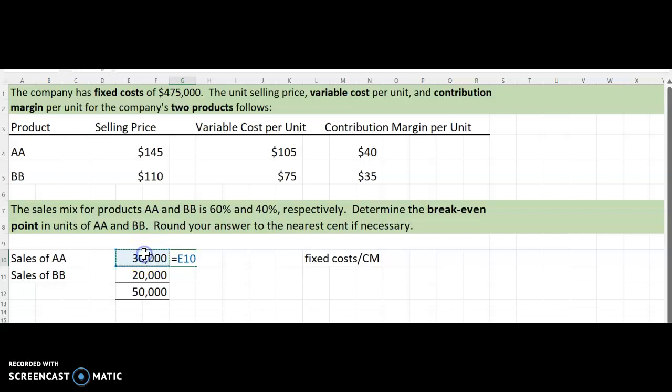So the sales of AA divided by the total, and you would get 0.6, so you would see that that is 60%. Then you would say the sales of BB, 20,000, divided by the total of 50,000. And so that is 0.40, or if you change it to percent, 40%.